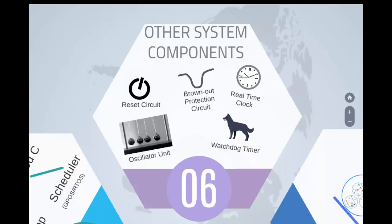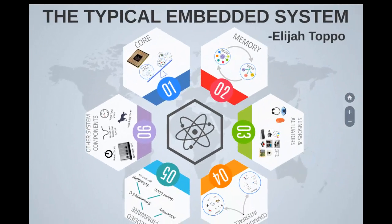With this we end our discussion of a typical embedded system. In summary, we have talked about core, memory, sensors and actuators, communication interfaces, embedded firmware, and other system components. If you liked this video, please give it a thumbs up and subscribe to the channel to receive notifications about new uploads. Have a great day — this is Elijah signing off.